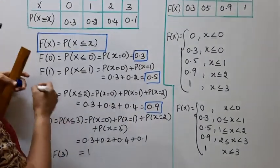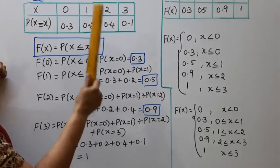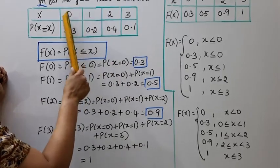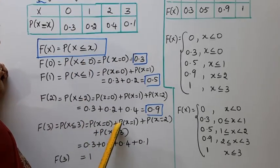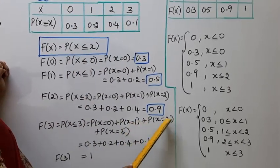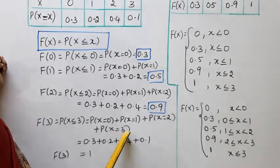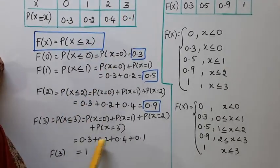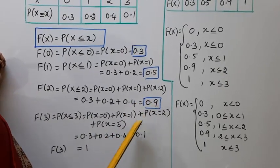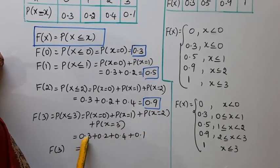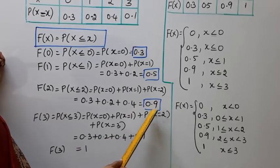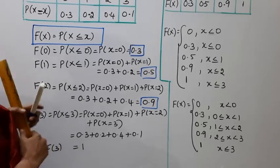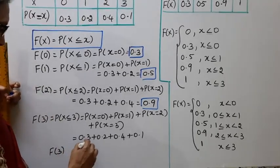P(X ≤ 3): values 3, 2, 1, 0 — so P(X=0) plus P(X=1) plus P(X=2) plus P(X=3) equals 0.3 plus 0.2 plus 0.4 plus 0.1. That is 0.9 plus 0.1 equals 1. So F(3) equals 1.